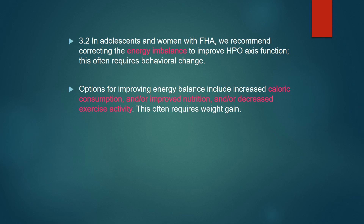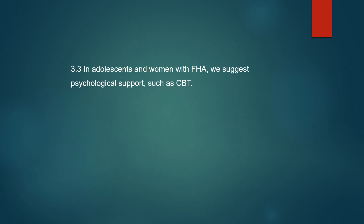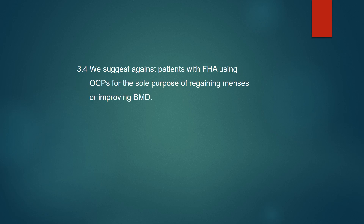In adolescents and women with FHA, correcting the energy imbalance to improve HPO axis function is recommended, and this often requires behavioral change. At least 6 to 12 months of weight stabilization may be required for the resumption of menses. In some cases, regular menses may never resume after weight stabilization, emphasizing the importance of psychological factors and stress. There is psychological support such as CBT; however, oral contraceptives are not recommended for the sole purpose of gaining menses or improving BMD.